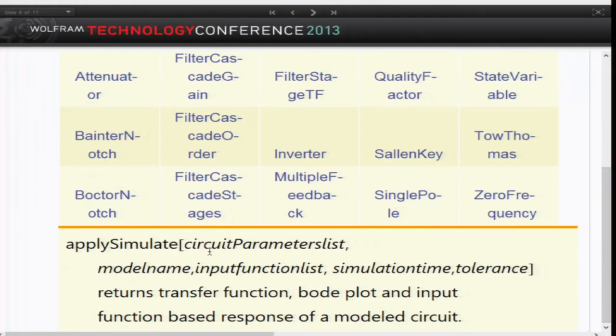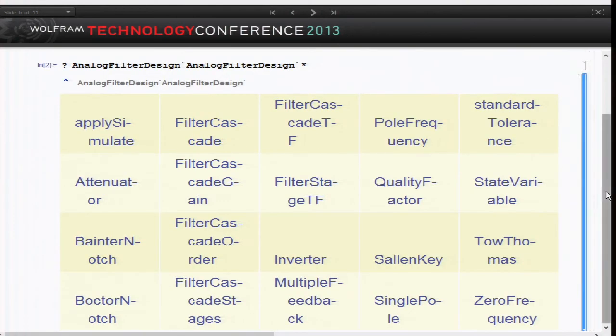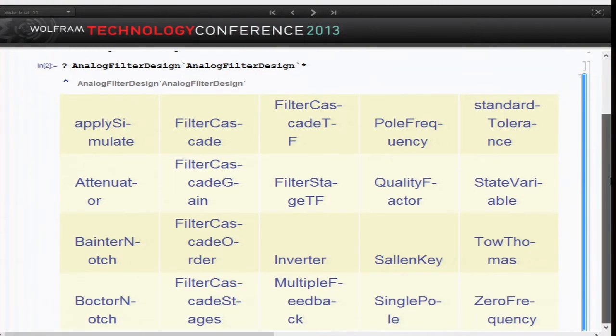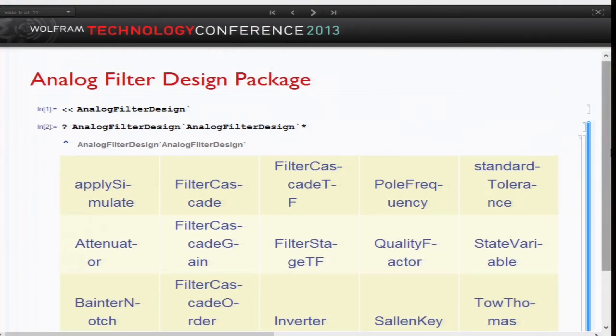Also, the function Apply and Simulate. Here, we would enter the list of parameters we calculated with one of the topology functions, enter the model name that we have in System Modeler, input function, simulation time. We would also enter tolerance because the Sallen-Key and the rest of the topology calculations give us exact values. But in practice, we would use standard resistor values. So we would enter prescribed tolerance, let's say 5% resistors or 1%. Then this function would simulate the circuit with both exact and standard values and compare the results to see how sensitive the circuit is to changes in elements.